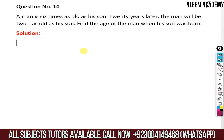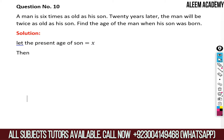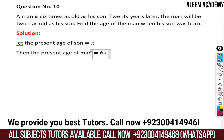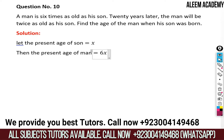First of all, we let the present age of both the son and the man. Let the present age of son be equal to x. Then the present age of man will be six x, because it is given in the question that the man is six times as old as his son.